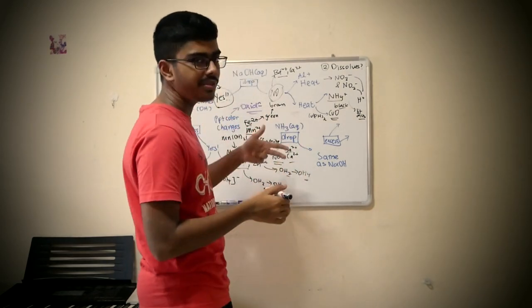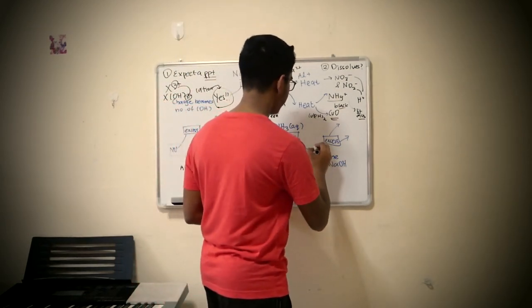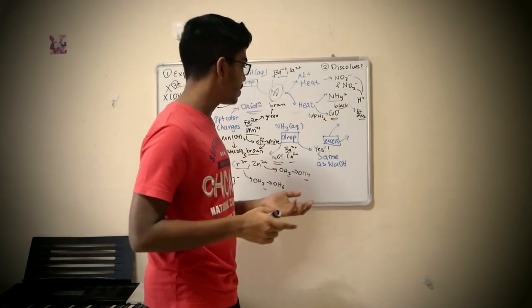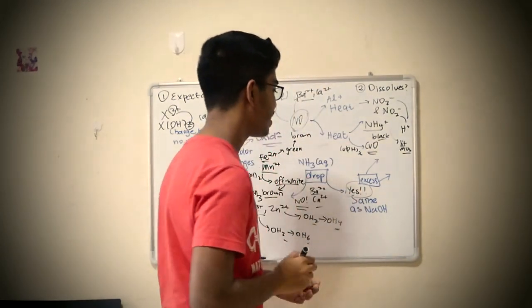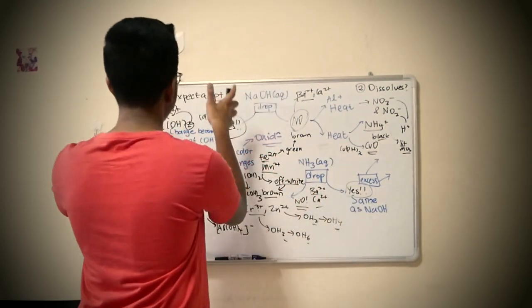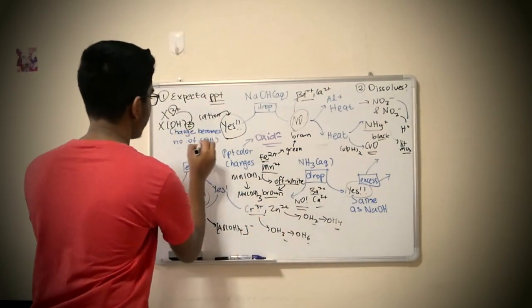Now you're adding NH3 and you see a precipitate. Yes, there is a precipitate. Now we're going to see a precipitate. You just follow the same as the NaOH aqueous example that we thought about. The charge becomes the number of OH. This is what happens to NH3.